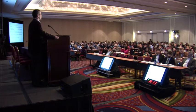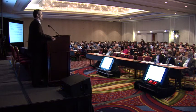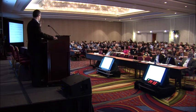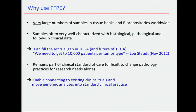We heard Lou Stout say we need to get to 10,000 patients per tumor type. So if we need to do that, we need to go to FFPE if we don't want a 20-year project. Another reason we want to move to FFPE is because these remain the standard clinical practice when you take biopsies and samples out of patients. And if you want to put sequencing into the clinic, you want to be able to work with FFPE.